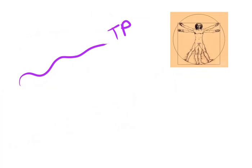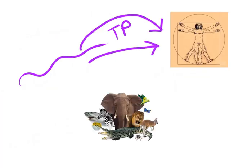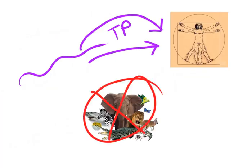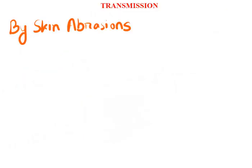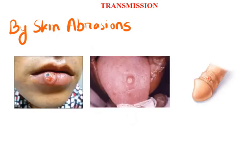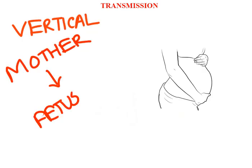Tryponema pallidum is a human organism — there is no animal reservoir. Tryponema pallidum is transmitted through abrasions from spirochete-containing lesions of skin and mucous membrane like mouth, anus and genitalia of an infected person to other persons by sexual contact. It can also be transmitted from an infected mother to a fetus through the placenta after the first 10 to 15 weeks of pregnancy.